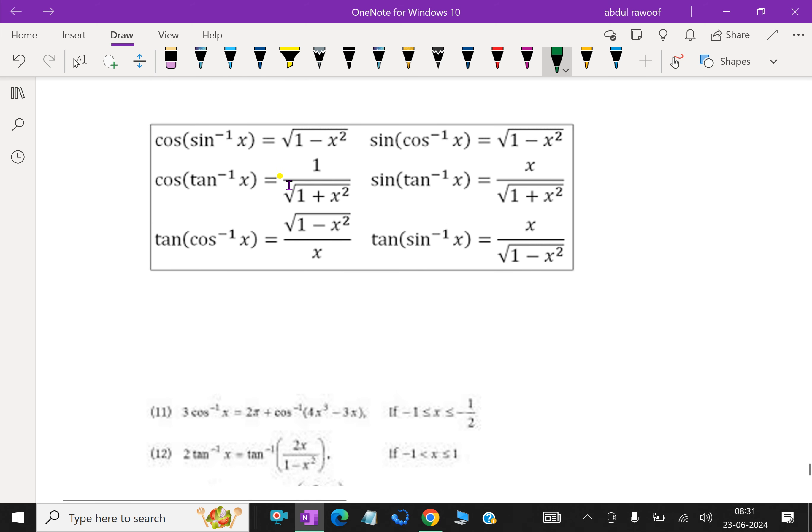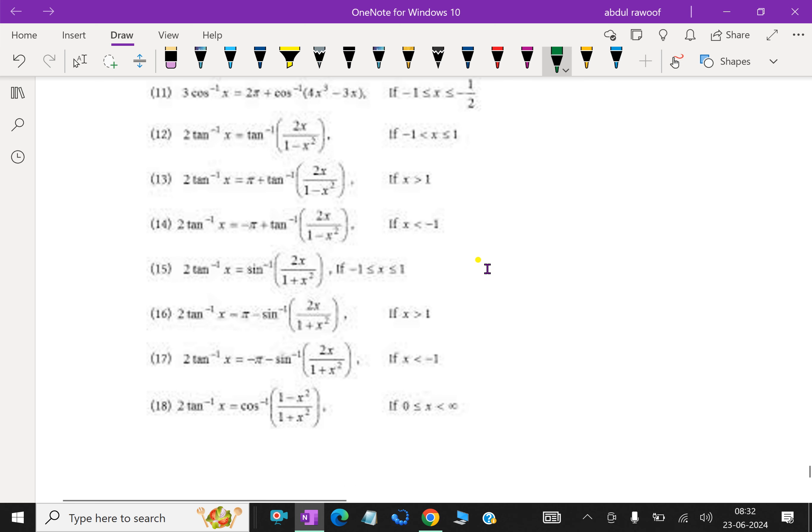Cos of sin inverse x equals square root of 1 minus x square. Cos of tan inverse x is 1 over square root of 1 plus x square. Sine of tan inverse x is x over square root of 1 plus x square. Tan of sine inverse x is x over square root of 1 minus x square. Like this, these relations are also useful.